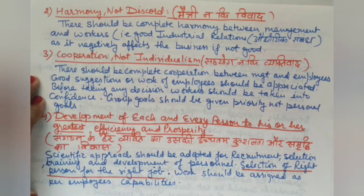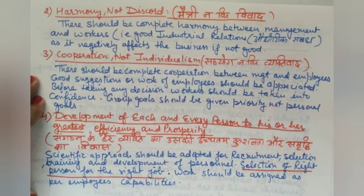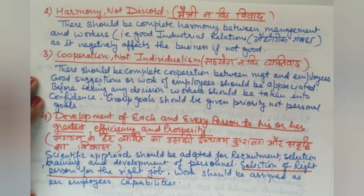When the right person is placed in the right job, we can utilize 100% of their capacity. Training them to 100% capacity increases efficiency, reduces time waste, reduces raw material waste, and reduces wasted effort. This benefits both the workers and the organization, as workers are the business's main assets.